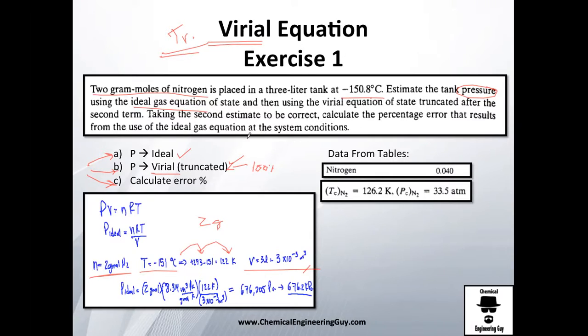From tables I'm going to find out that my acentric factor of nitrogen is essentially 0.04, and my critical values - critical temperature of nitrogen is 126 Kelvin and my critical pressure is 33.5 atm.